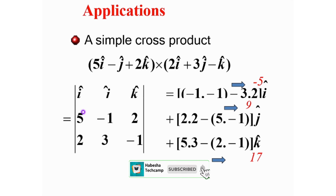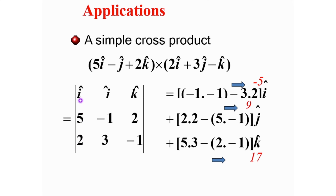We use the determinant method. Set up the determinant for the cross product with the two vectors. The components are: minus 1, then minus 2, and we evaluate. So 3 is equal to 2, minus 3 is equal to 2, this is equal to 2. We will have the same component: minus 2, and 3 is equal to 2, 5 is equal to minus 1, and 5 is equal to 2.